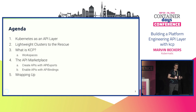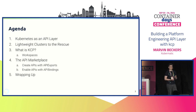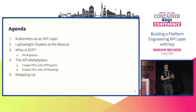Then we're going to talk about some solutions in the ecosystem to challenges you might encounter when using the Kubernetes API as your control plane. Then we're going to talk about KCP specifically, its characteristics, and then something I call the API marketplace — basically a consumer and provider pattern for APIs and how KCP can help with that. And then we're going to wrap up.